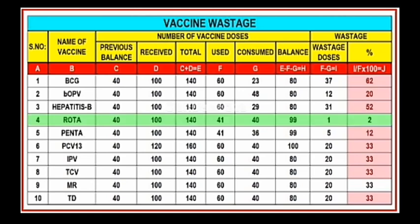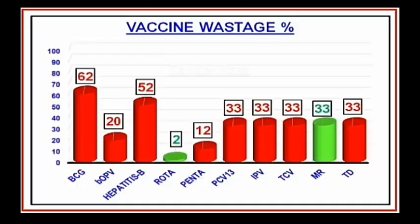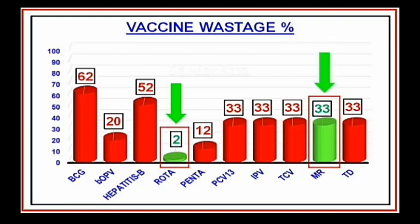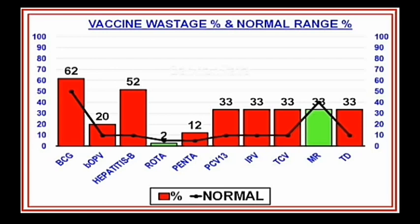According to this chart, only two vaccines — Rota and MR — are in the green line, because Rota is 2% and MR is 33%. In the vaccine wastage chart graph, only these two vaccines — MR and Rota — are within range, while all other antigens are above the acceptable wastage range.